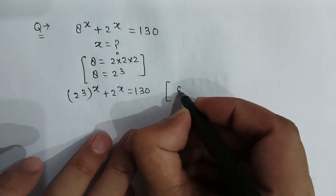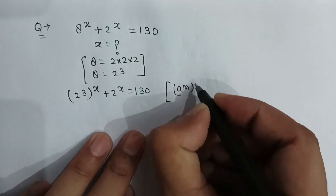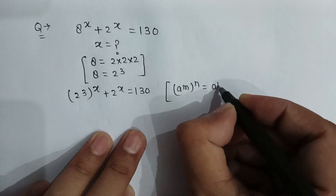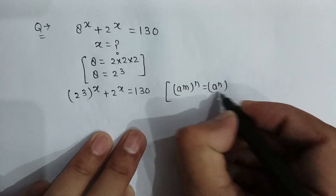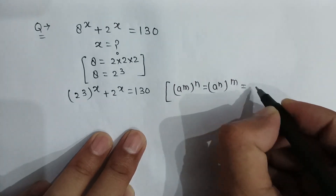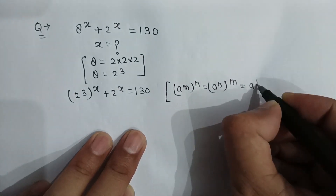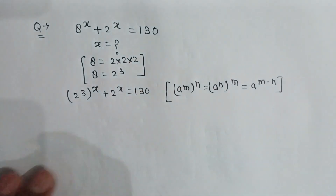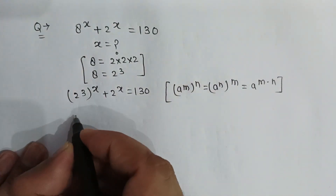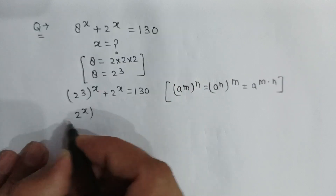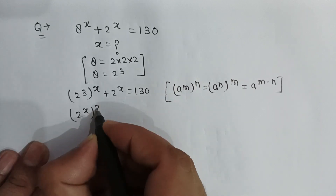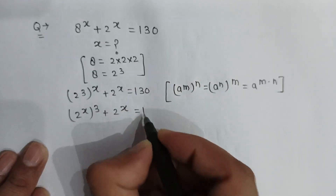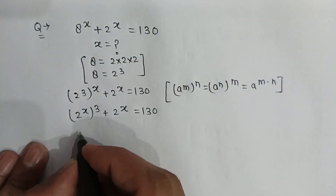As we know, if a to the power m, whole power n, can be written as a to the power m multiplied by n. Applying this rule, it becomes 2 to the power 3x plus 2 to the power x is equal to 130.